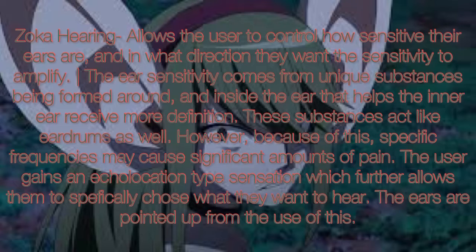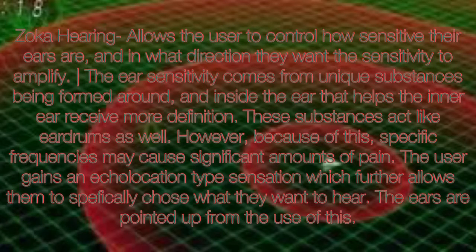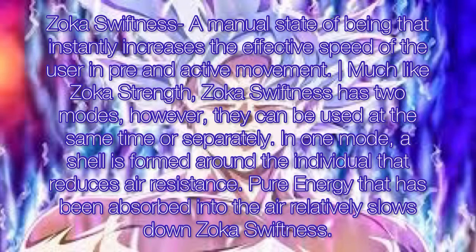Zoka hearing allows the user to control how sensitive their ears are and in what direction they want the sensitivity to amplify. The ear sensitivity comes from unique substances being formed around and inside the ear that help the inner ear receive more definition. These substances act like eardrums as well; however, because of this, specific frequencies may cause significant amounts of pain. The user gains an echolocation-type sensation which further allows them to specifically choose what they want to hear. The ears are pointed up from the use of this element.